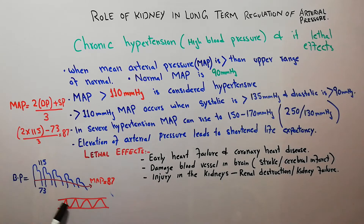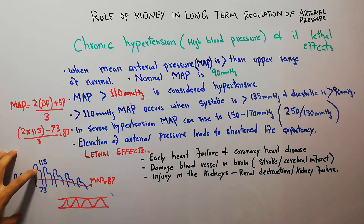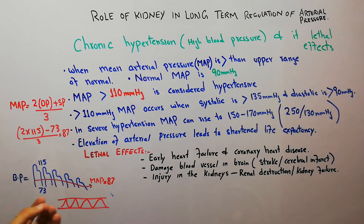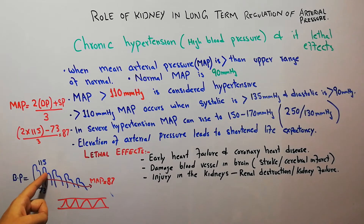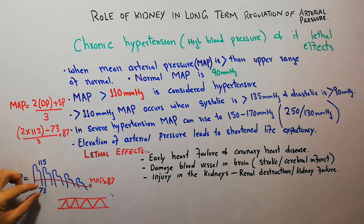The pressure on blood vessels keeps on increasing and decreasing. It is highest in the aorta and keeps on decreasing towards the capillaries. Blood pressure has two components: a systolic component, defined by the contraction of the heart, and a diastolic component, defined by the relaxation of the heart.